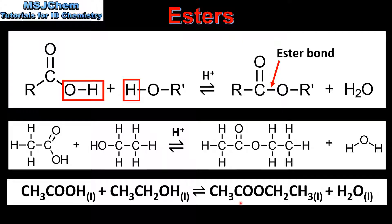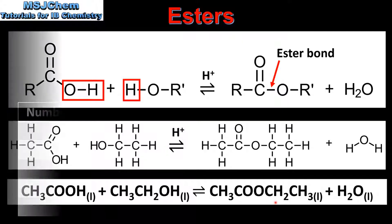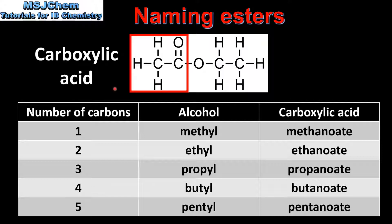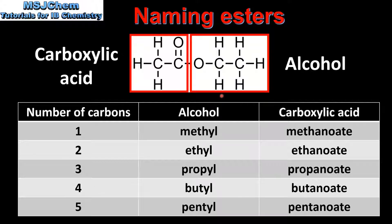When we write the condensed structural formula for an ester, we usually have the carboxylic acid part first followed by the alcohol part. An ester is made up of a carboxylic acid and an alcohol, so when naming esters, one part of the molecule is named after the carboxylic acid and the other part is named after the alcohol. To name the carboxylic acid part, we need to count the number of carbon atoms in the longest chain starting from the carbon atom that has a double bond to the oxygen atom.